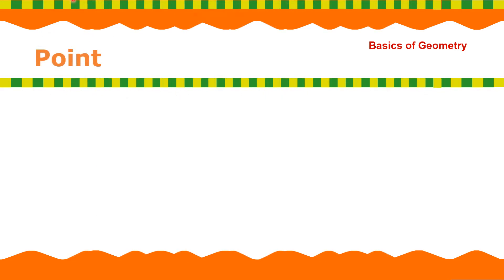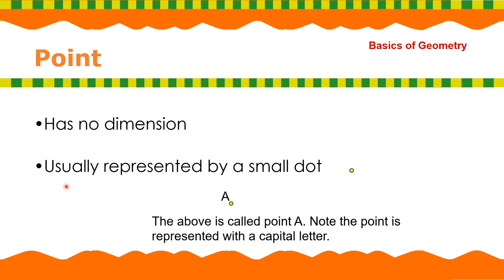Next, we have point. And what is a point? It has no dimension. Ano ibig sabihin ng dimension? Walang gilid, walang sukat. It's usually represented by a small dot. The above is called point A. This is point A. Note, the point is represented by a capital letter.